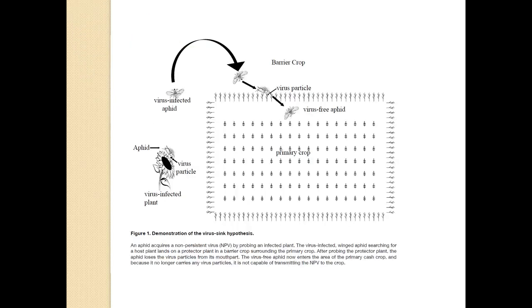For a non-persistent virus, you can create a barrier crop. Your primary crop is within a central area, and the virus-infected aphid will feed on whatever is growing around the edge. In this case a sunflower crop is used, and the virus stays in the sunflowers and does not move on to the primary crop.